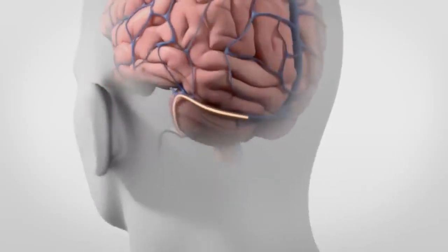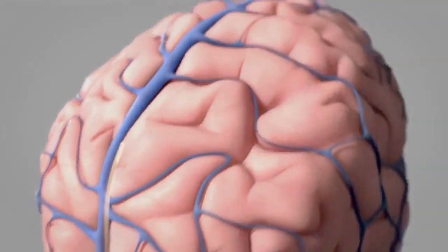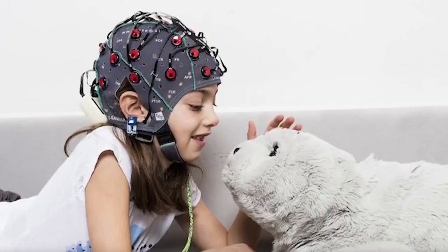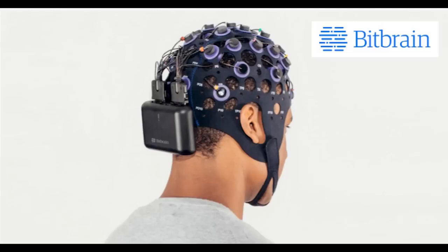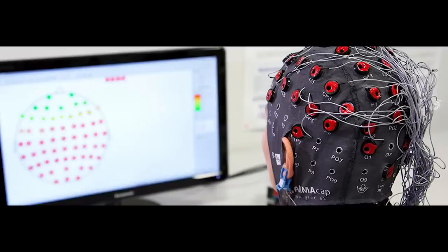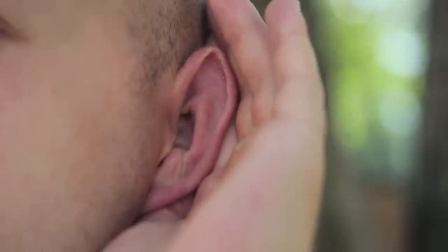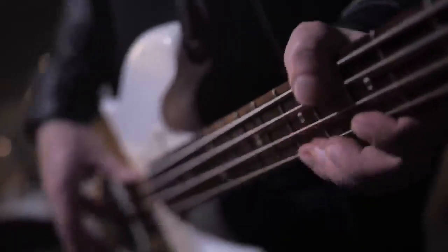Existing BCI technology can be split into two philosophies, invasive and non-invasive. You've probably seen non-invasive BCIs. It's like a weird hat with a ton of electrode sensors all over it. This can read the electrical signals from the brain, but it doesn't do a very good job. There's an entire skull in between the sensors and the neurons. So it's no surprise that it isn't very effective. It's like trying to listen to a concert from outside the arena. You might get the thump of the bass notes, but you won't hear the vocals.